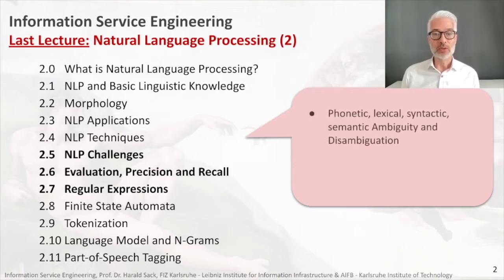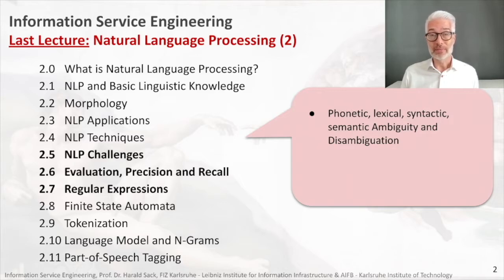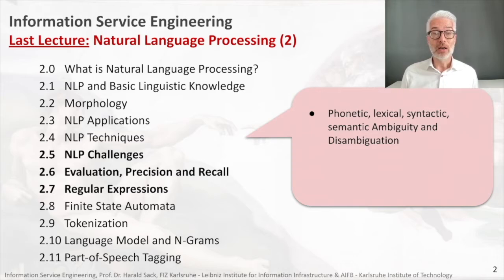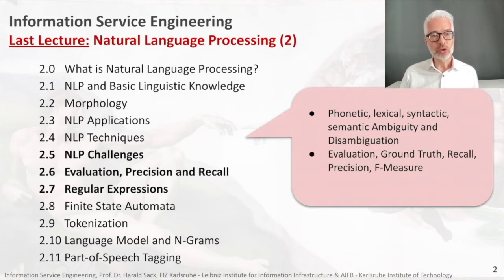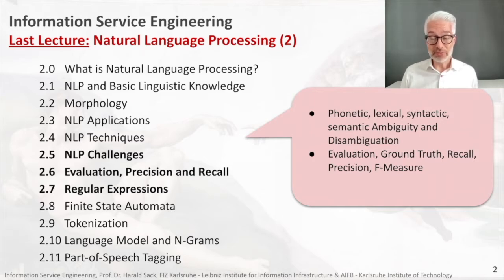Last week we learned about natural language processing challenges. For example, ambiguity, which is one of the most difficult challenges in any kind of natural language. It can be on different levels: phonetic ambiguity, lexical ambiguity, syntactic, or even semantic ambiguity. We also learned how to conduct NLP experiments and how to quantify the quality of results — that is, how to conduct evaluation properly — and we learned about precision, recall, and F-measure.